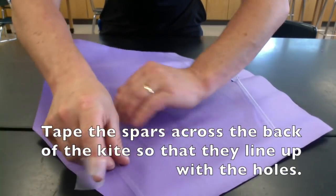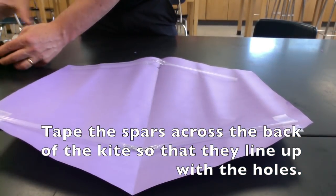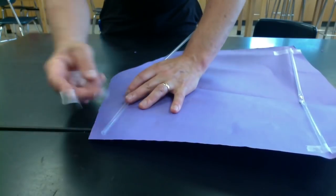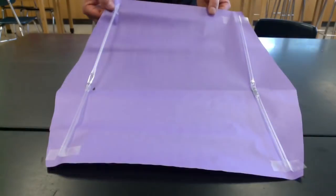Tape the spars across the back of the kite so they line up with the holes. The tape should secure just the ends of the spars. Do not use extra tape.